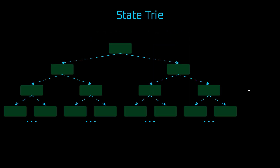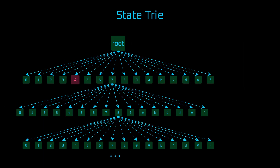However, a binary Patricia trie will need 160 levels of depth to store all of the Ethereum addresses, which is a lot. Let's take a look at a hex trie, where each node branches into 16 possible children from 0 to F. Now, to store all of the addresses, we would need 40 levels. While it's already a nice optimization, it's still a huge depth and a significant computational overhead when proving that an item belongs to the set. That's why Ethereum implements its specific, more efficient Merkle-Patricia tries.